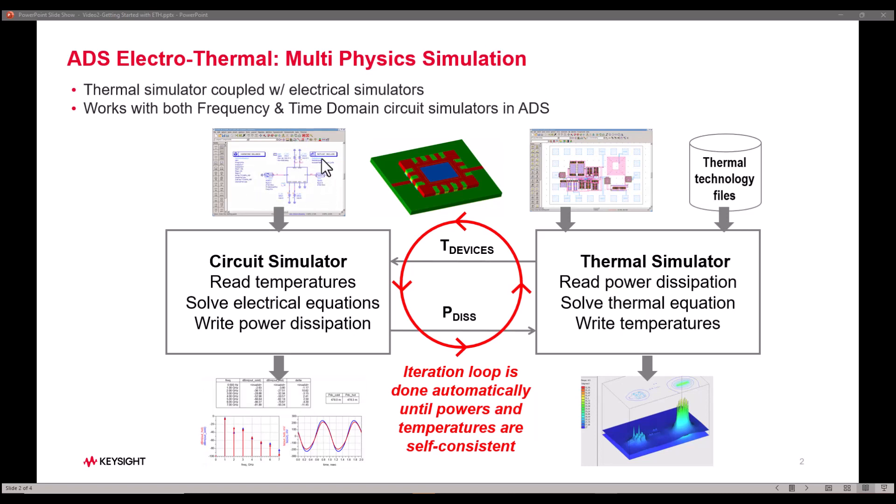In the first view which is our schematic view we have a test bench containing a sub-circuit on which we would like to perform electrothermal analysis and then we have layout of that view which has all the devices and components placed in the manner you want to place them. Now as a first step circuit simulation is performed which reads the initial temperature information.